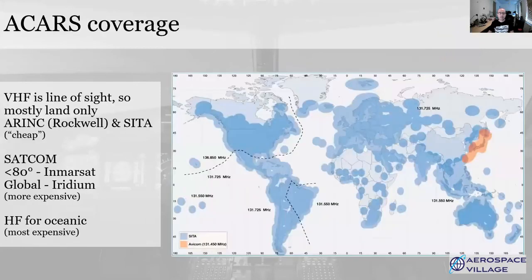The original plain old ACARS and ACARS over AVLC use VHF radios, so they need direct line of sight — and that includes accounting for the Earth being round — to a ground station. Aircraft are often flying pretty high up, 35,000 feet or more, so the range of a single transmitter is still quite large. But as you can see from the coverage map, there are lots of gaps over oceans, Africa, and places aircraft tend not to fly very much, like northern Canada.